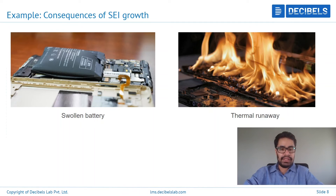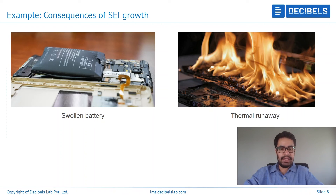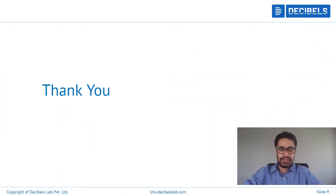In this video, we have seen what exactly is meant by SEI, or Solid Electrolyte Interface; what exactly are the contributing factors that cause SEI to grow; and what is meant by electrolyte breakdown. We have also seen what exactly are the composing chemical compounds of the SEI, and some consequences of continued SEI growth, which can lead to dendrites and then eventually thermal runaway. Thank you for watching this video — I hope it was useful.